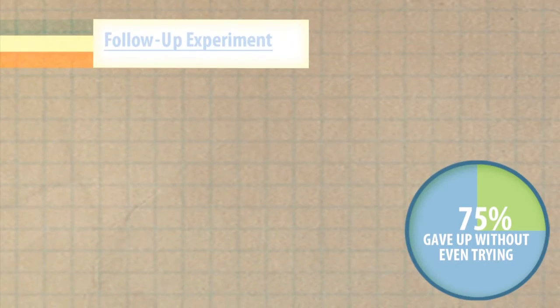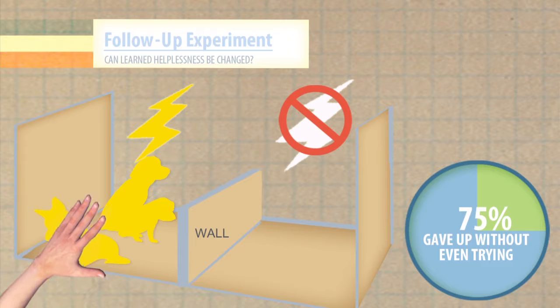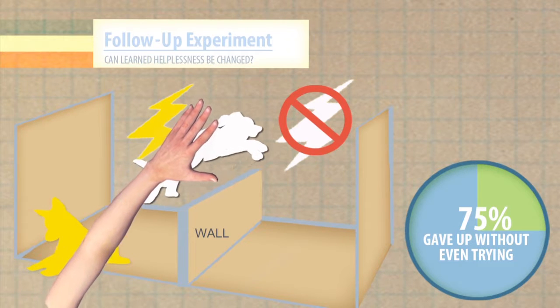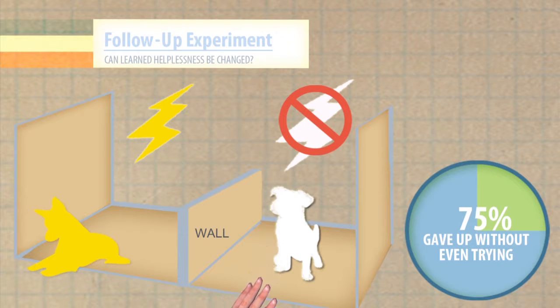Other experiments looked at whether learned helplessness could be changed. For example, in a follow-up experiment, Seligman and Mayer taught the learned helpless dogs how to escape the shock by jumping over the wall.